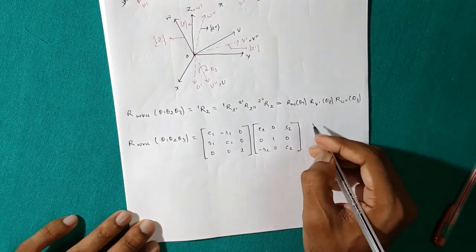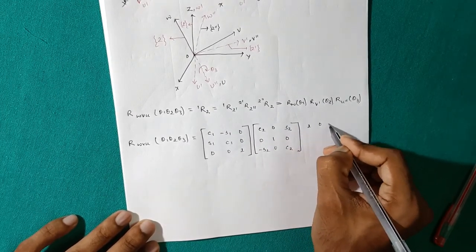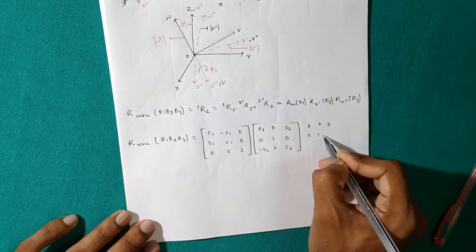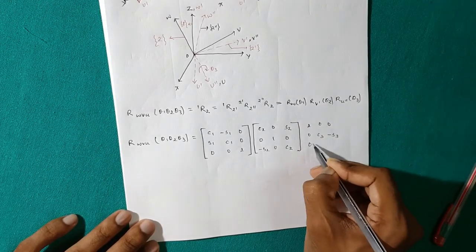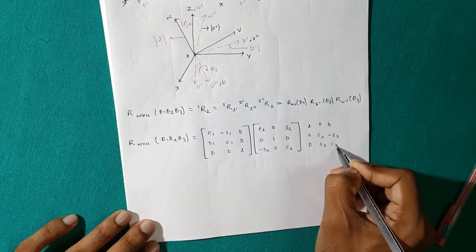So finally, for R_U dash theta3, it will be: 1, 0, 0; 0, C3, -S3; 0, S3, C3.